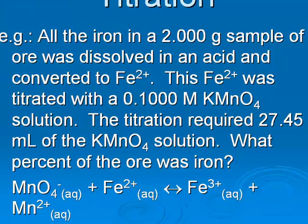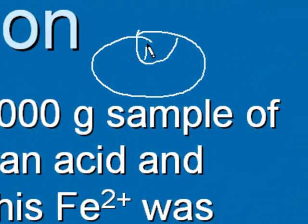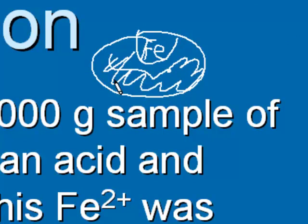In this titration, we're taking all the iron in a 2-gram sample of ore and dissolving it in an acid and converting it to Fe2+. So an ore is just something that contains a metal, but that's not all. We can think of the ore as Fe, part of it is Fe, and the rest of it is other stuff. We want to know what percent of this rock is Fe.